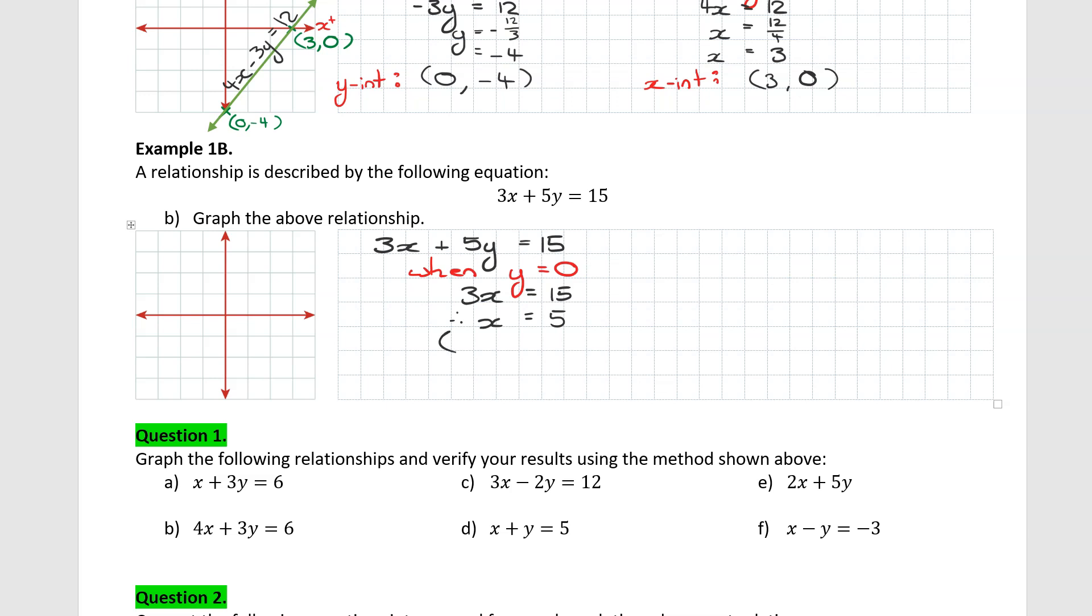And therefore, our x intercept in this case is going to be at 5, 0. So I did it a little bit backwards compared to last time. Well, no problem. Same result.